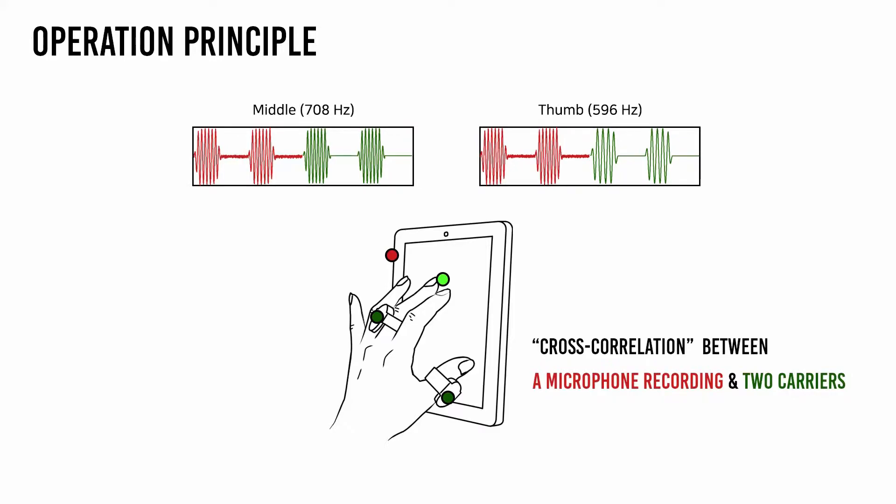Therefore, recognizing contact fingers corresponds to identifying carrier frequencies from the captured data. To demodulate the encoded vibration sequences, we use cross-correlation that measures the similarity between two sequences.